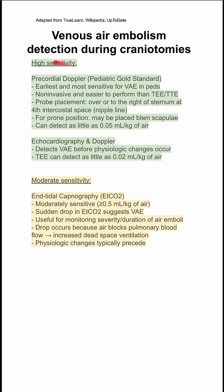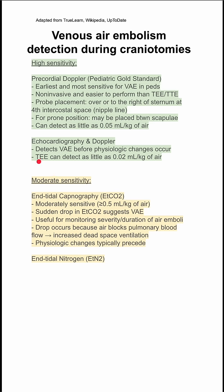Another high sensitivity method is echo and Doppler — either TEE or TTE. These detect venous air embolism before physiologic changes occur, so you'll see it before changes appear on your monitors. Transesophageal echo specifically can detect as little as 0.02 cc per kilogram of air.